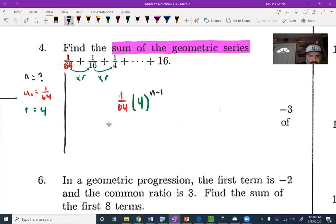Now what I want to figure out here is how many terms do I have. I know the last one is 16, so I'm going to plug in 16 for a sub n because I know that's the last one. So 1 over 64 times 4 to the power n minus 1.